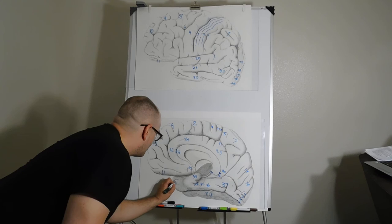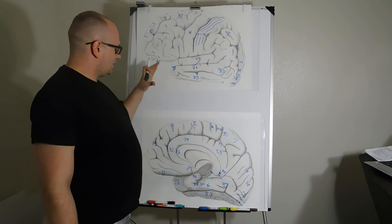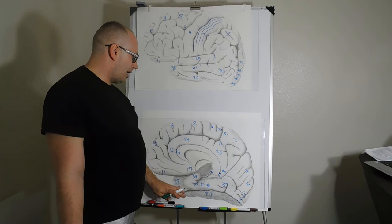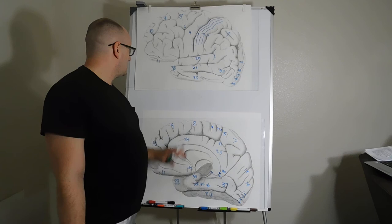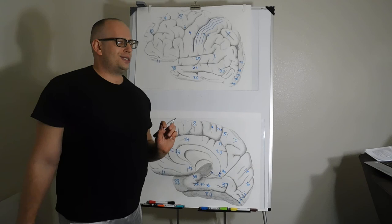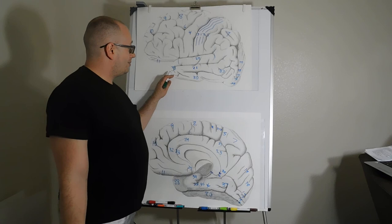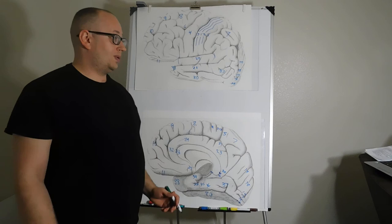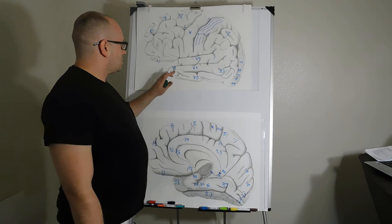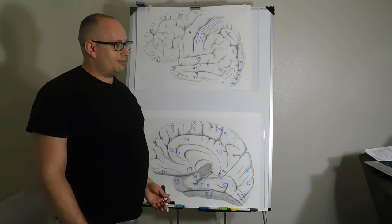Brodmann area 38 is your temporal pole — the anterior part of the temporal lobe. It's probably affected early in Alzheimer's disease as the pathology spreads from that region. Interestingly, damage to this area has been associated with savant syndrome, where individuals can remember extraordinary amounts of information.